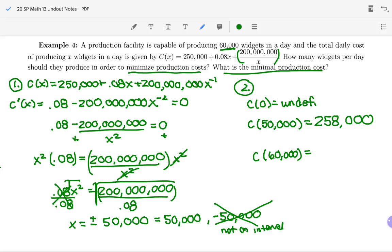And if we compare that to plug in 60,000, 250,000 plus 0.08 times 60,000 plus parentheses 200 million divided by 60,000. You should get $258,133, and that three keeps going so I'm going to stop at cents. So $258,133.33. So what would you advise for our answer here? How many widgets should they produce? And what's their minimum cost?